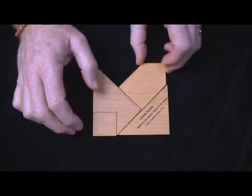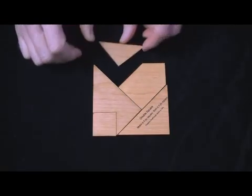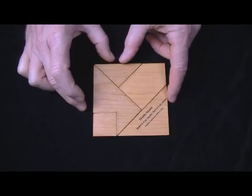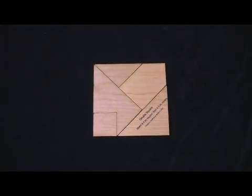This becomes part of the corner of our square. And the small triangle goes in like so. And voila, we have another perfect square using all five pieces.